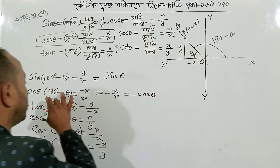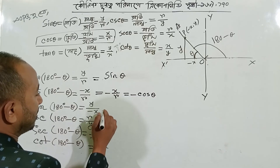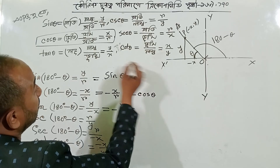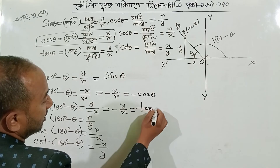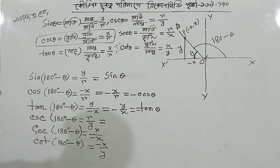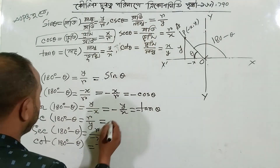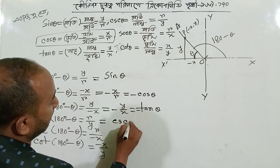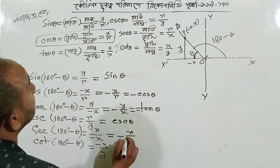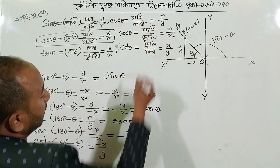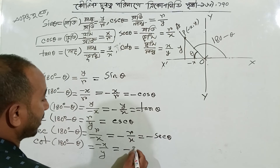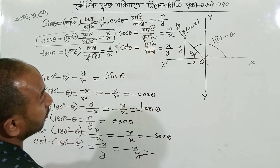Minus cos theta and the cos theta is equal to minus cos theta. y by r is minus y by x, minus y by x is equal to tan theta. Minus tan theta and here is r by y. r by y is equal to 0. csc theta and the other is equal to minus r by x. Minus r by x plus r by x is minus theta. Minus g theta. And here is minus x by y equal to minus x by y.